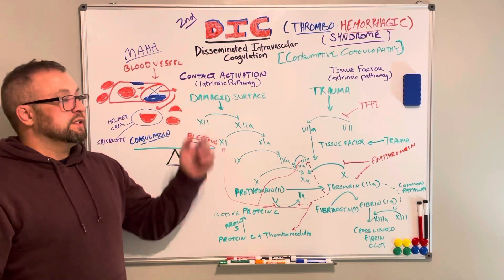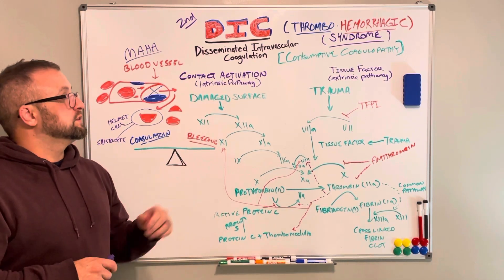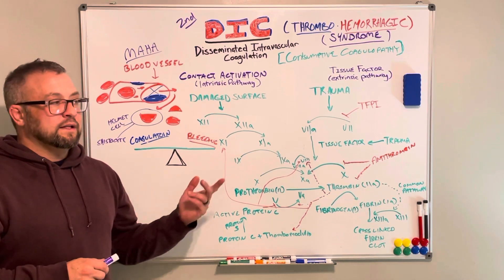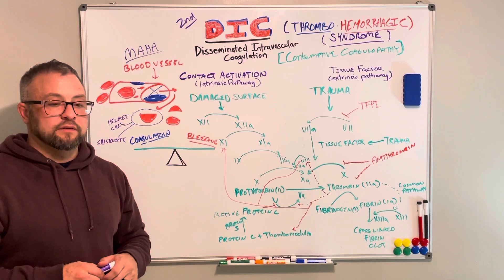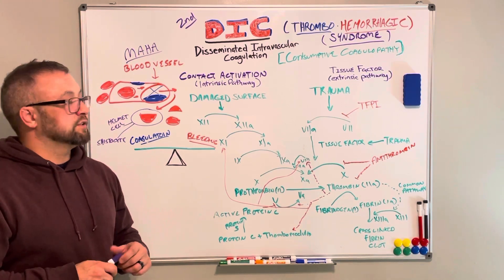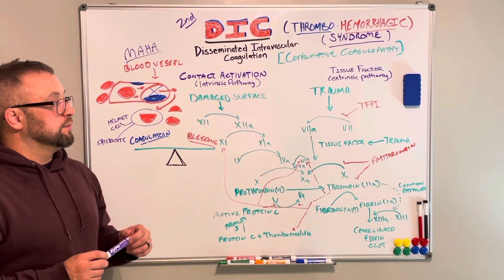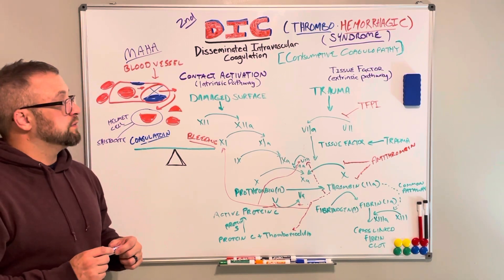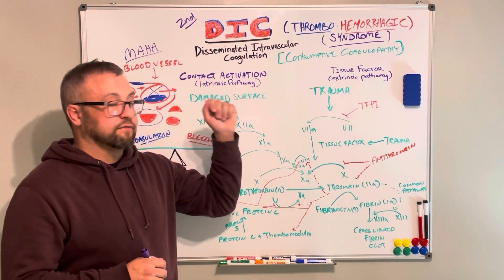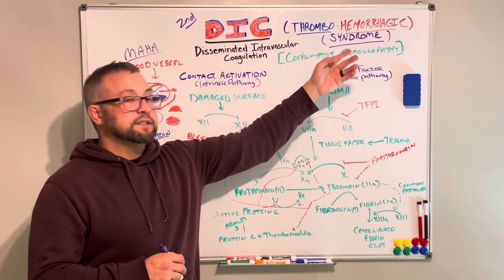Disseminated just means throughout, intravascular means inside the vasculature where the blood is contained, and coagulation means forming clots. Why is the hallmark sign of this condition bleeding from every orifice, every cut, every scratch, and every surgical wound? To understand that, we need to understand how clots are formed. It starts off as a thrombotic condition first, which leads to hemorrhage — that's why it's categorized as a thrombohemorrhagic syndrome.